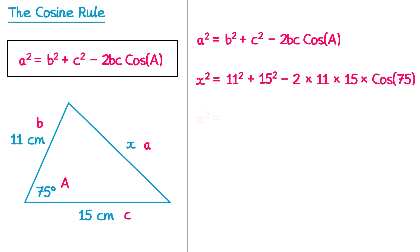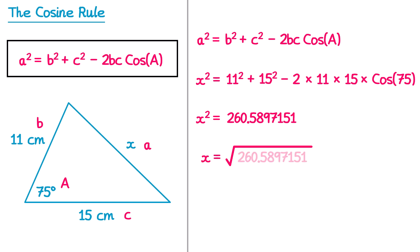Now we leave the left hand side alone — that's x squared — but this whole right hand side here can be put into your calculator. If you type all of that into your calculator accurately, you'll end up with this number here. So if x squared is equal to this number, then x must be the square root of that number. So if we square root both sides, on the left we get x, and on the right we get the square root of that number. You'll definitely need to use your calculator to square root this number, and if you do, you'll end up with this number here. Since x is the thing we're trying to find, we can now round the final answer — let's go for one decimal place, that would be 16.1, and these lengths are all in centimetres, so this one would be centimetres too.